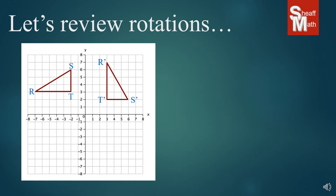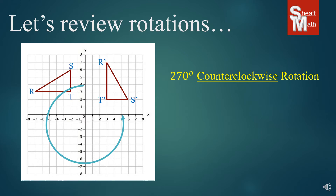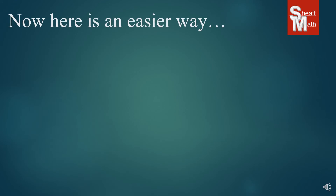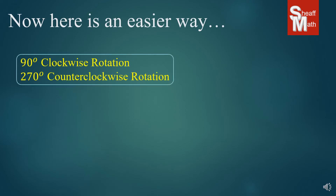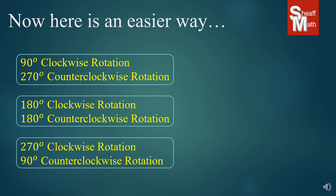Now this one is a 270 degree counterclockwise rotation, and it's also a 90 degree clockwise rotation — so these two will end up in the same spot as well. Why am I telling you all this? Well, in order to solve problems that ask you to find the rotation points of new images, there is a list of rules that you can learn. These are all the pairs that matched up.